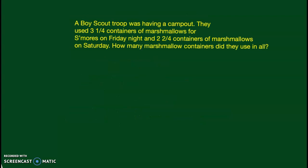For the second problem, it's kind of the same scenario, just tweaked a little. A Boy Scout troop was having a camp out. They used three and one-fourth containers of marshmallows for s'mores on Friday night and two and two-fourths containers of marshmallows on Saturday. How many marshmallow containers did they use in all? With this problem we're putting things together, so we're going to be adding: three and one-fourth plus two and two-fourths.